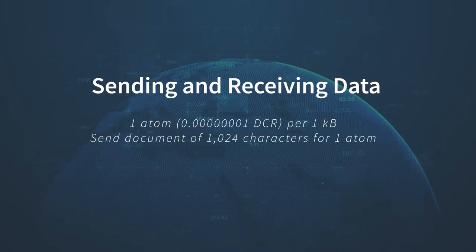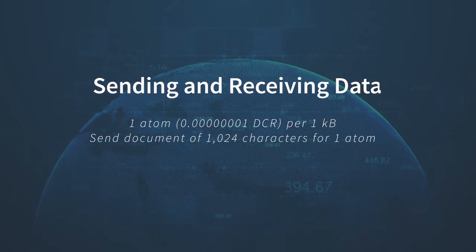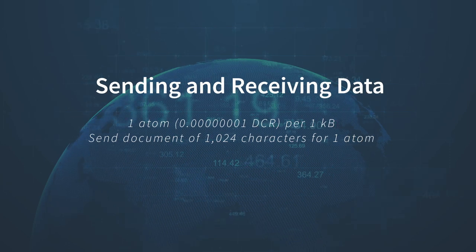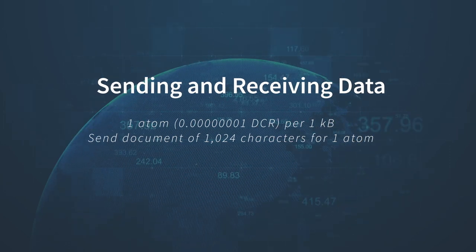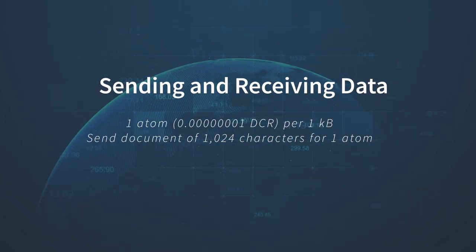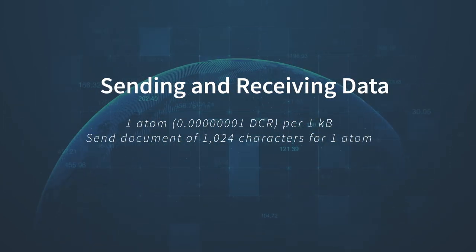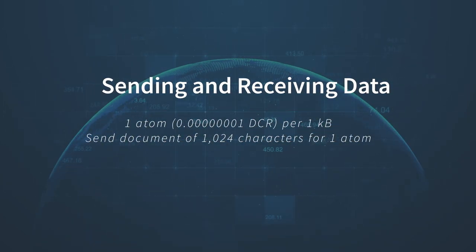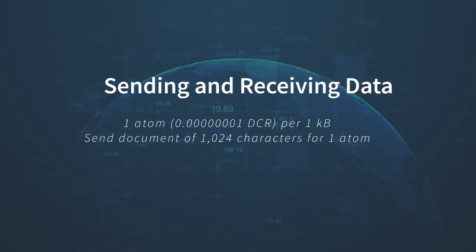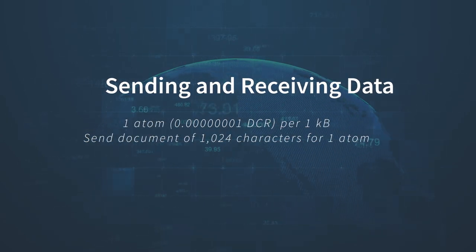Currently, sending and receiving data is set at one atom per 1 kilobyte. Doing the maths, this means you can send and receive a document of 1024 characters for one atom.